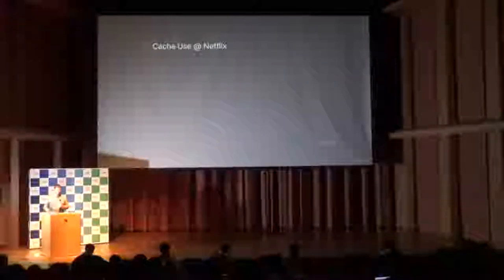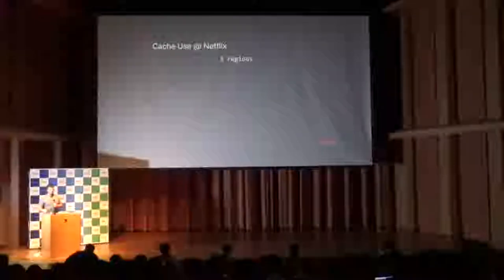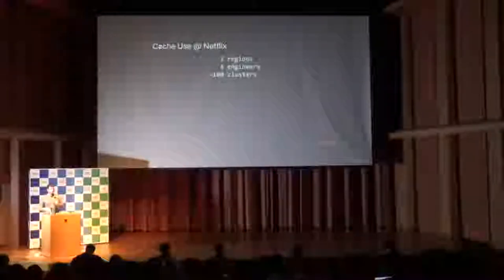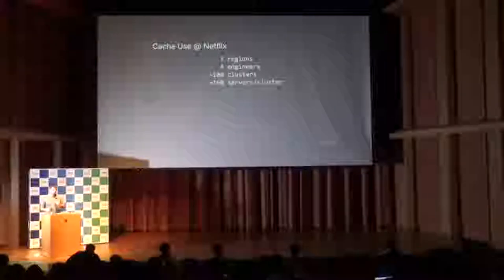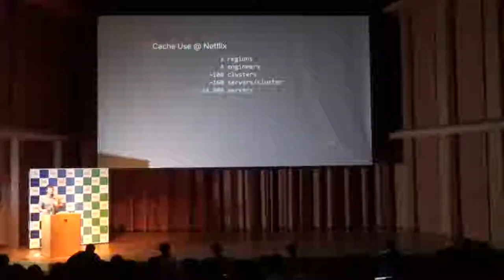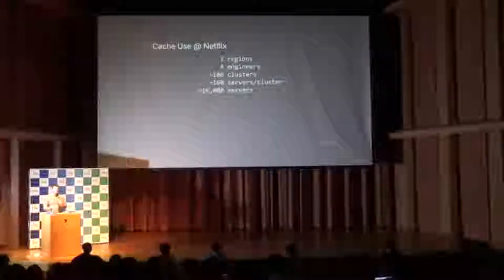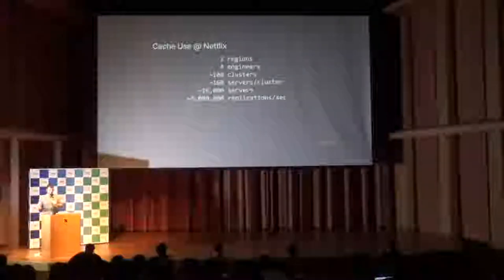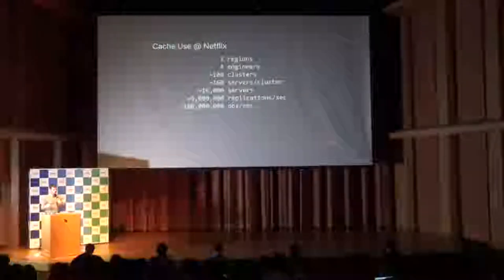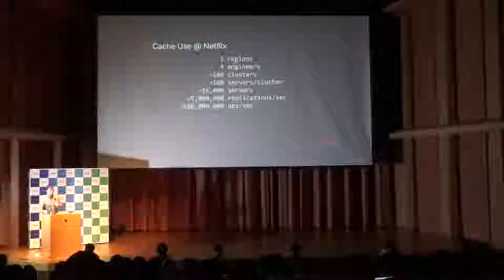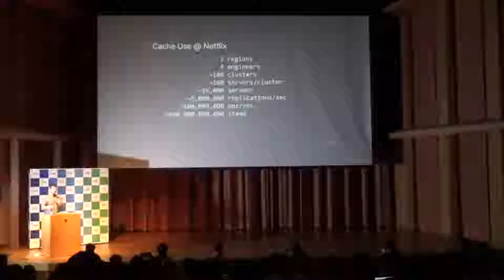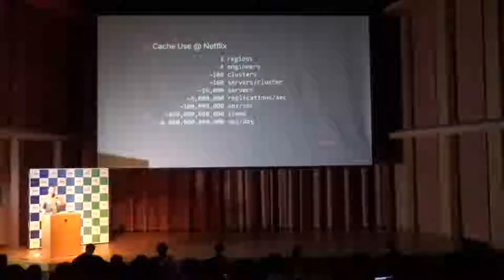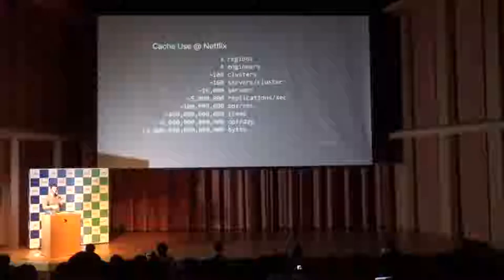To give you a sense of scale: we have three different AWS regions. We run with about four engineers working on EVcache. We have about 100 clusters of EVcache in production, with about 160 servers per cluster — that's around 16,000 servers on a regular basis, going up towards 20,000 during deployments. Between regions, we have around 5 million replications per second. We get up to 100 million operations per second on a global scale. We're storing about 400 billion items in the cache. In a 24-hour period, we'll do about 6 trillion requests, and we're storing right about 3 petabytes of data.